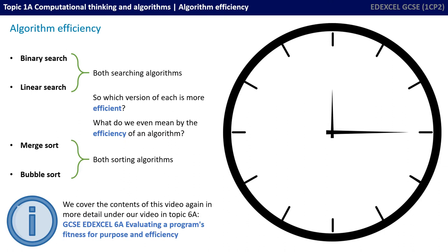We have separate videos in this section that look at each of these in depth. In this video, though, we're focusing on algorithm efficiency — so which version of each of these is more efficient, and what do we even mean by the efficiency of an algorithm?